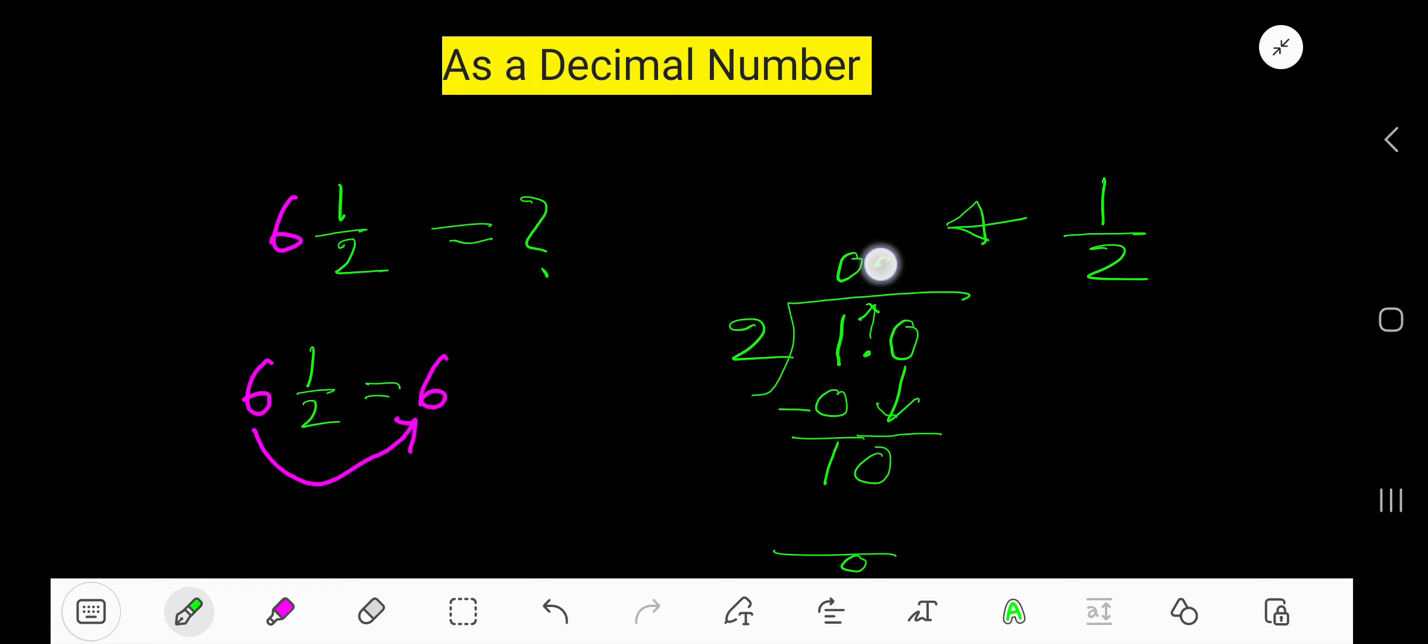a decimal. The decimal must come to the quotient directly. Two goes into ten how many times? Two goes into ten five times. Five times two is ten. If you subtract, you're getting zero. That is half, which means point five.